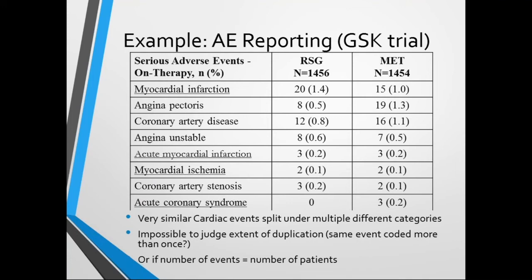Here's an example of a systematic review we did on myocardial infarction with rosiglitazone. We were able to access the clinical trial report on the GSK trial register. When we looked for myocardial infarction, the table in the trial report showed numerous descriptions of myocardial infarction. Some very important and similar cardiac events were reported in different categories, and we had great difficulty with this. This slide illustrates that there's a huge diversity of adverse events that are poorly defined or recorded differently.